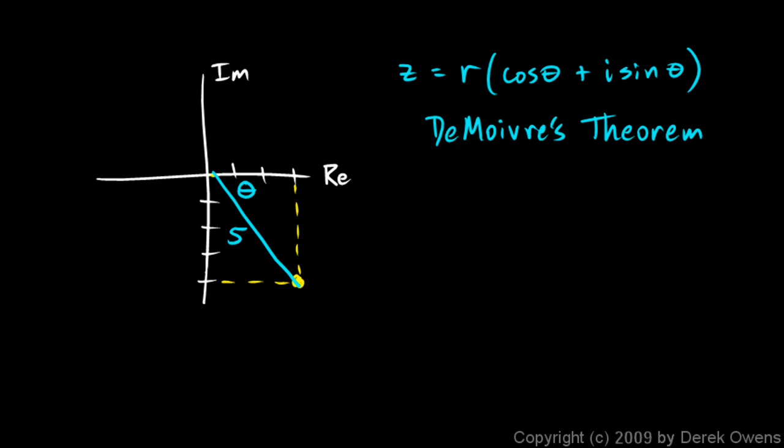And in this case, r is equal to 5, and theta, you can see, is the inverse tangent of 4 over 3. Or really the negative inverse tangent of 4 over 3. Because we're rotating this way, not our normal counter-clockwise rotation.